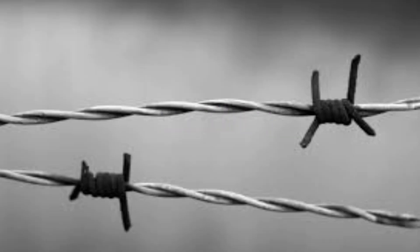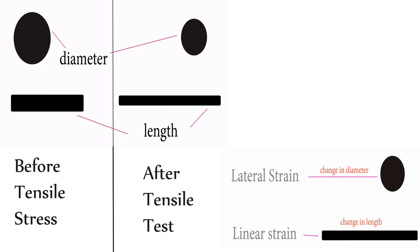Next, we look at ductility. Ductility relates to cross-section reduction or cross-section loss during the tensile test.